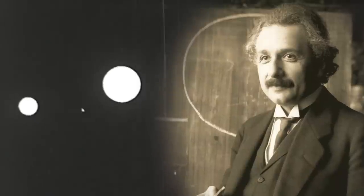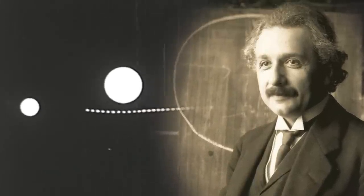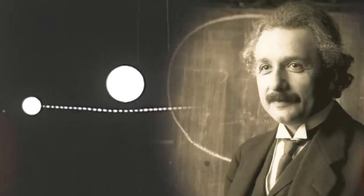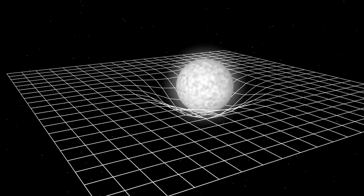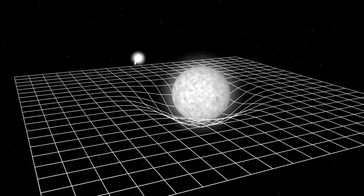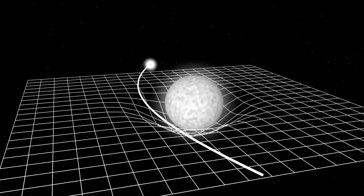One of the key predictions of Einstein's general theory of relativity is that the curvature of space near a massive body, such as a star, causes a ray of light passing near it to be deflected by twice the amount that would be expected.